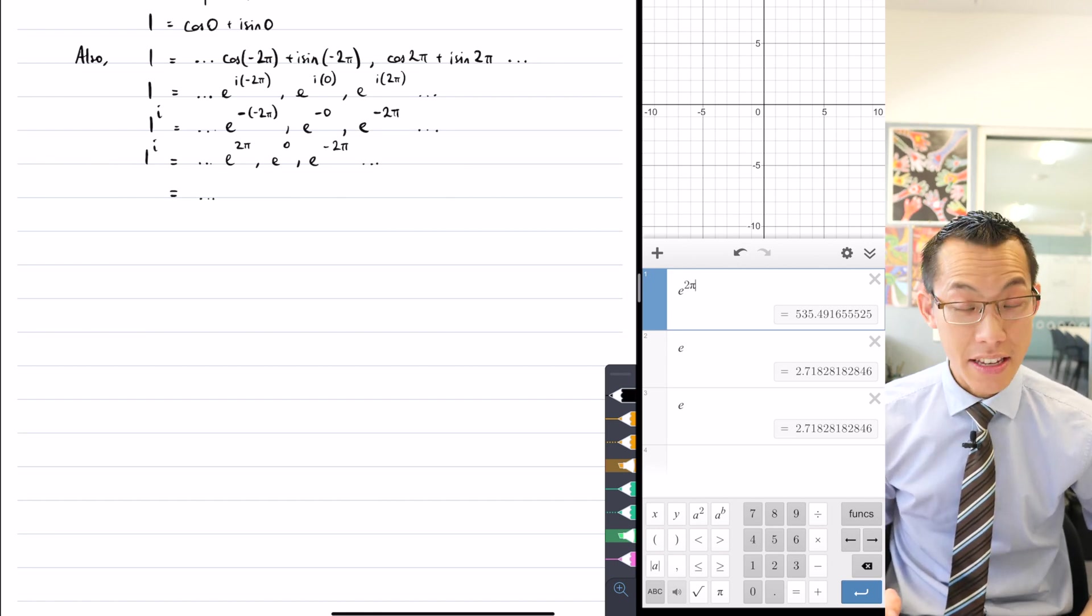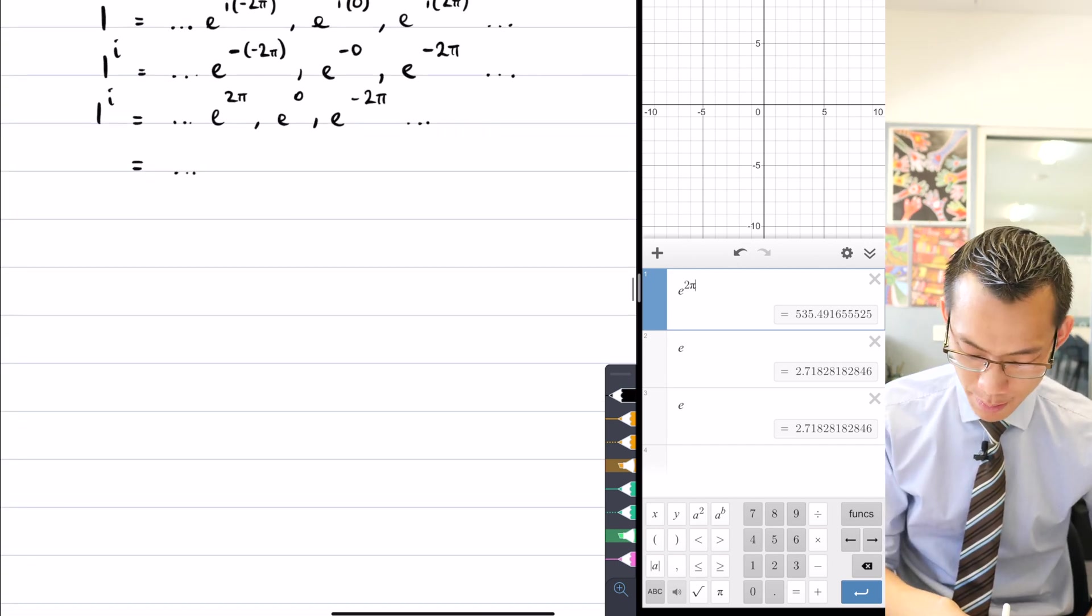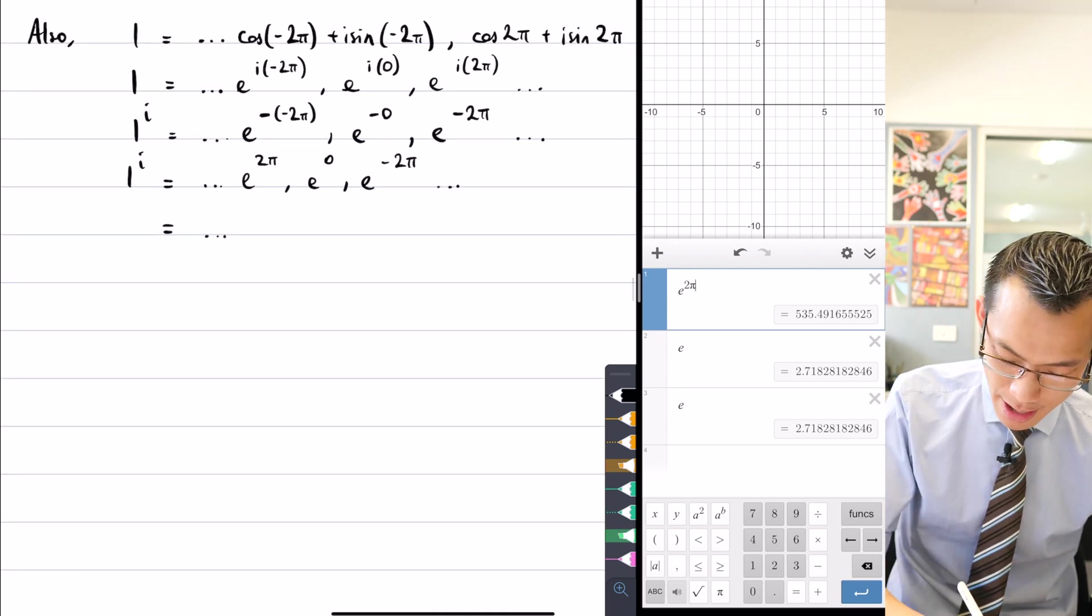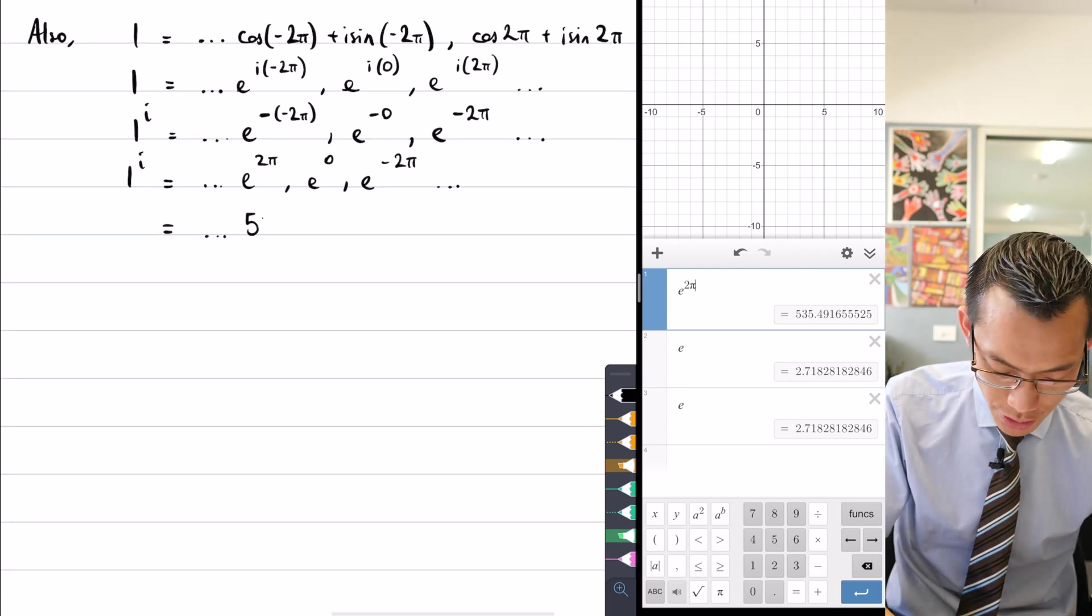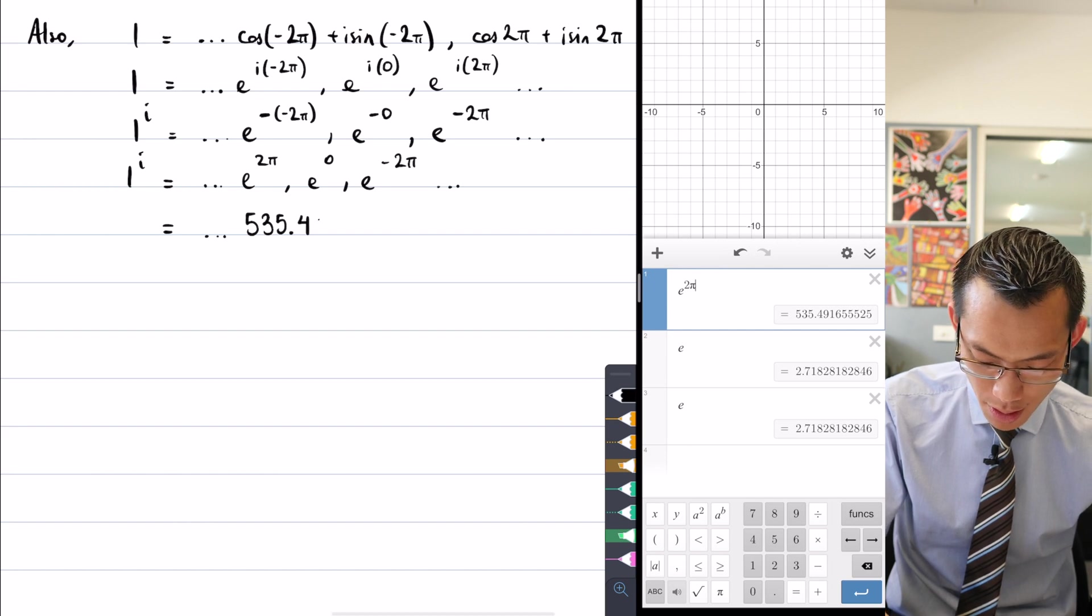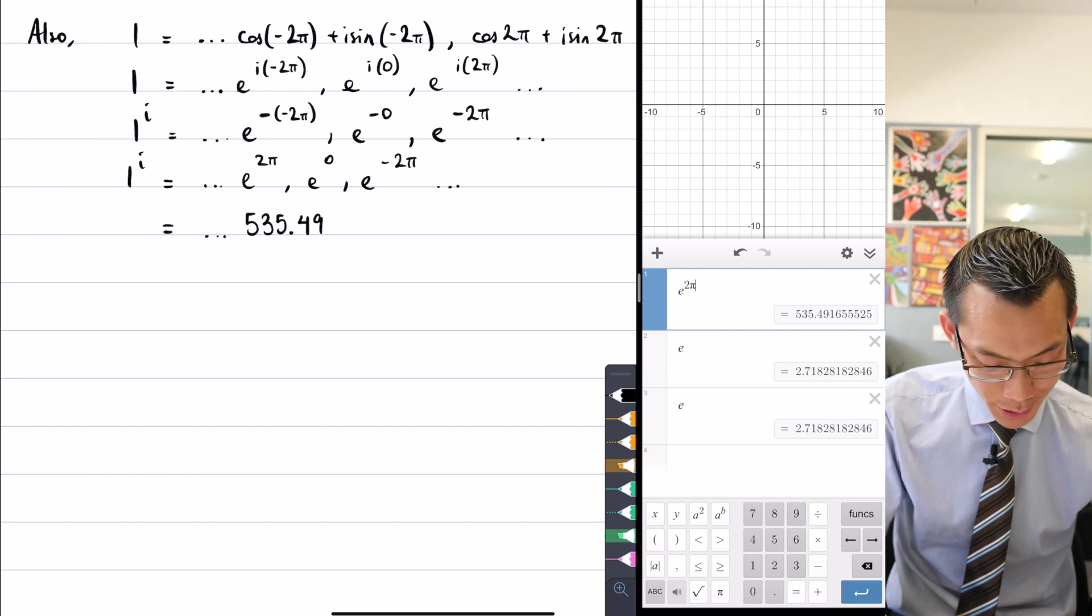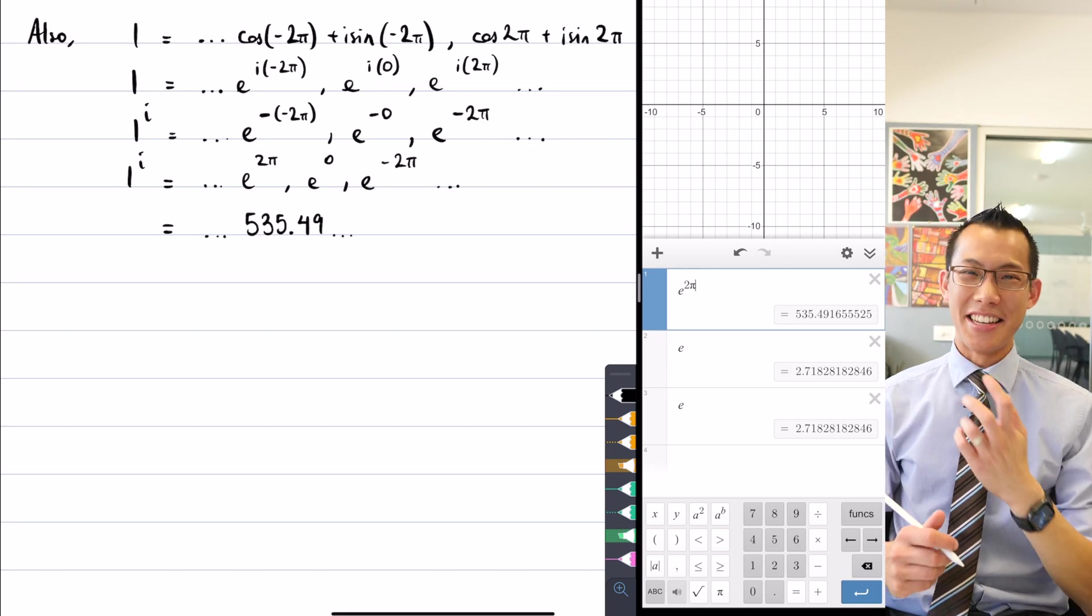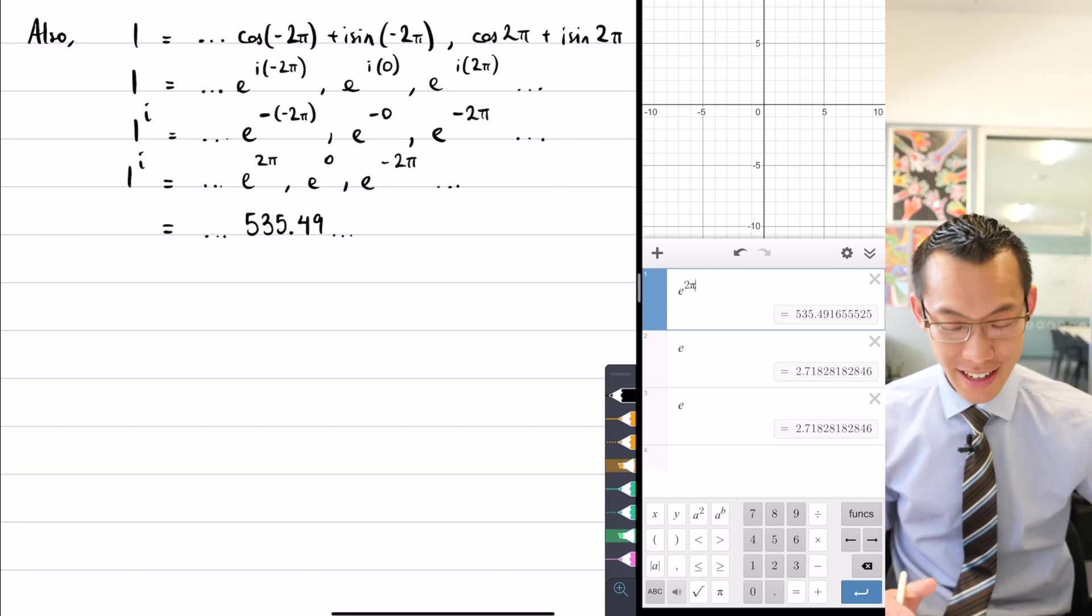Wow, that is a big number. So I'm going to write e to the two pi, that's five hundred and thirty five point four nine, that'll do, I think that's enough decimal places there. So that's e to the two pi, crazy.